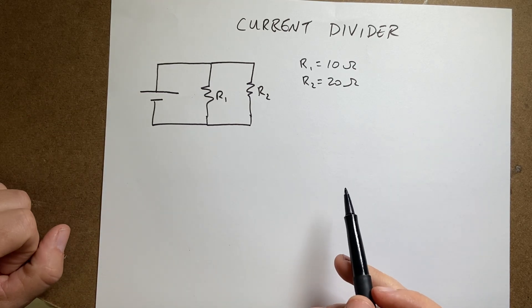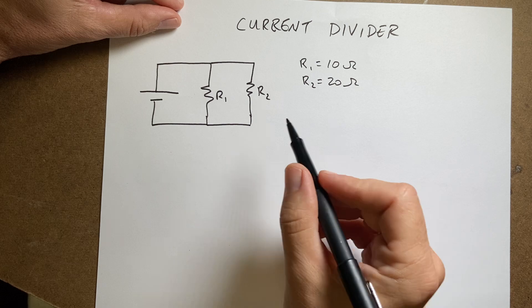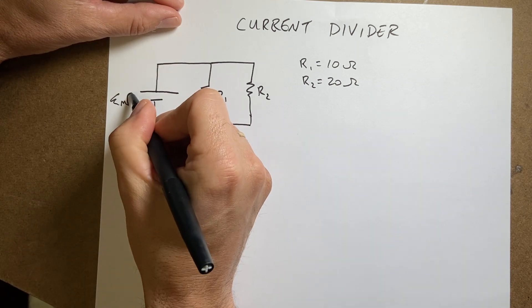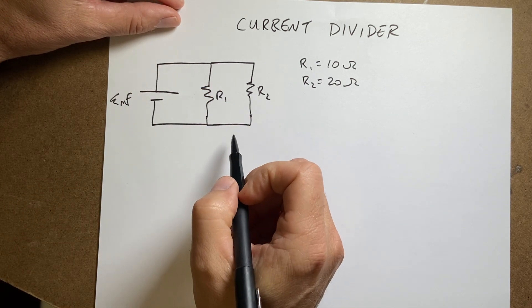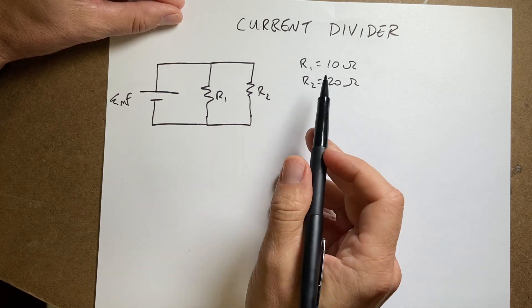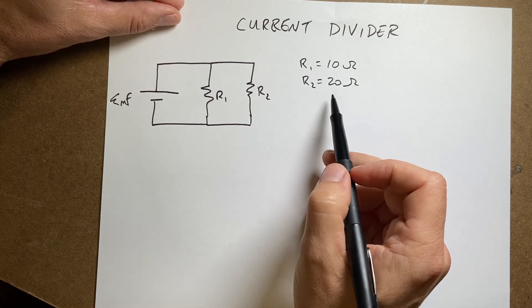Okay, I want to show you how to use resistors in parallel as a current divider. So here I have some battery and it's connected to two resistors in parallel, R1 and R2. And I picked values just for the fun of it, 10 ohms and 20 ohms.